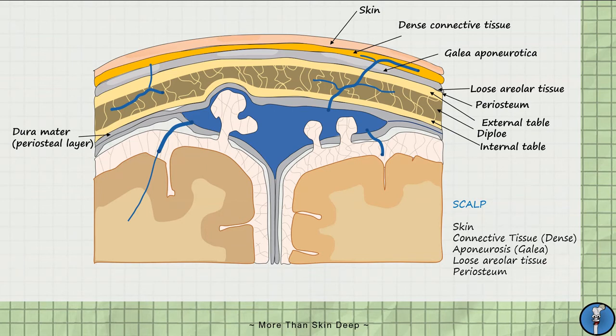The dura mater is further divided into two layers: the periosteal layer, which hugs the surface of the internal table, and the meningeal layer, which follows the brain and spinal cord through foramen magnum.